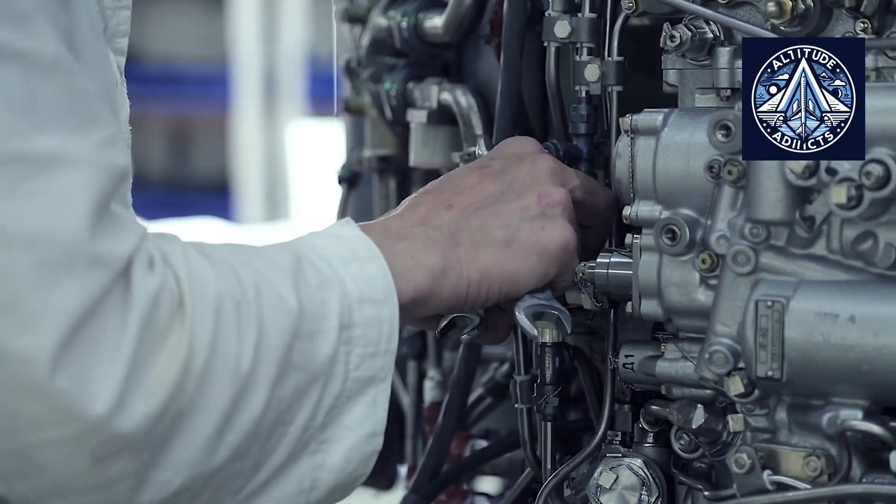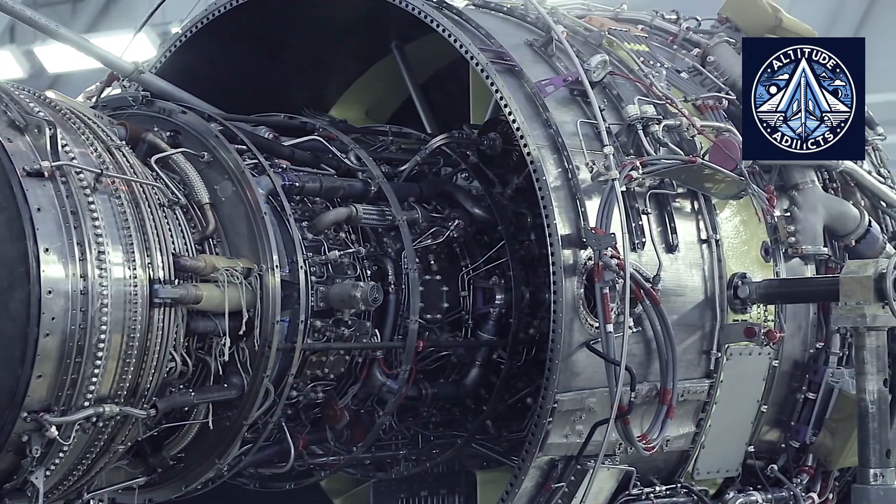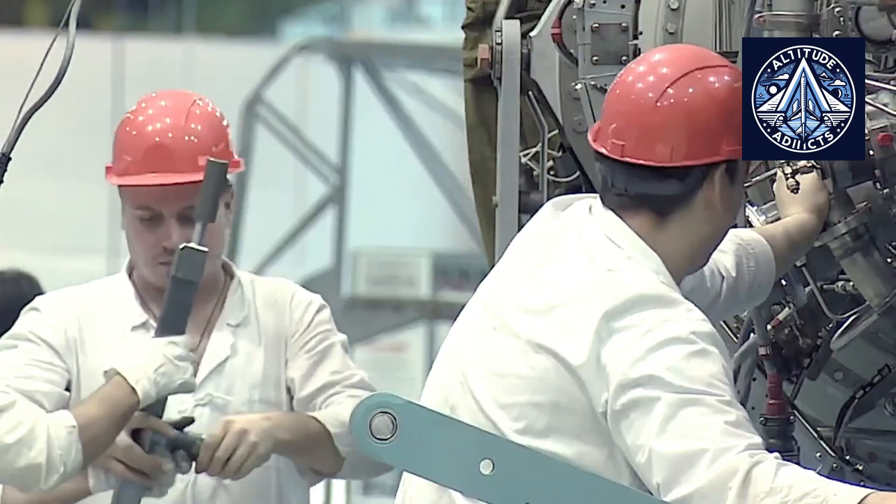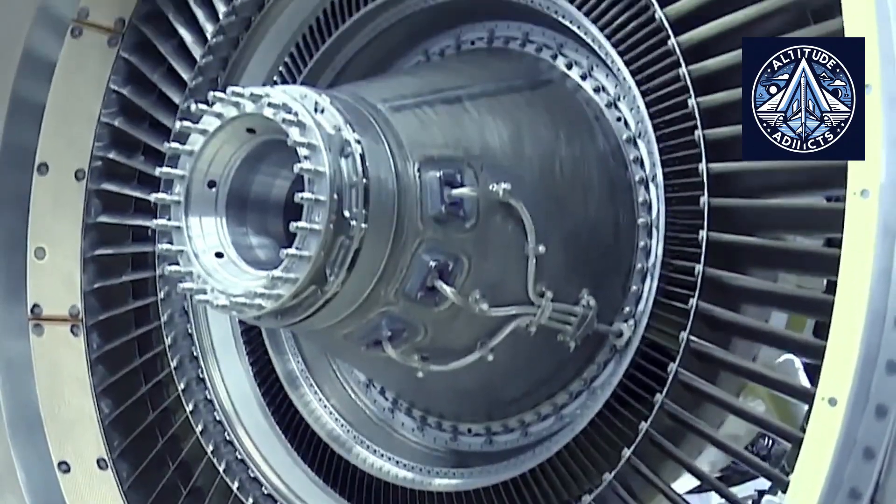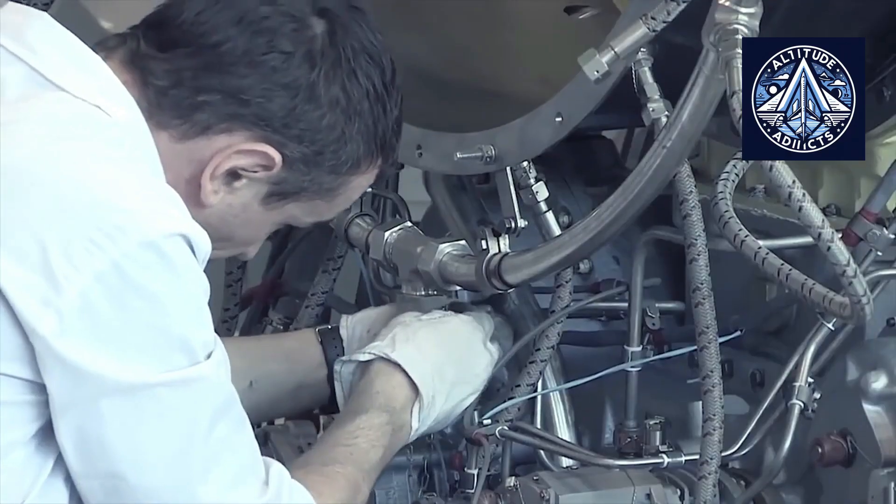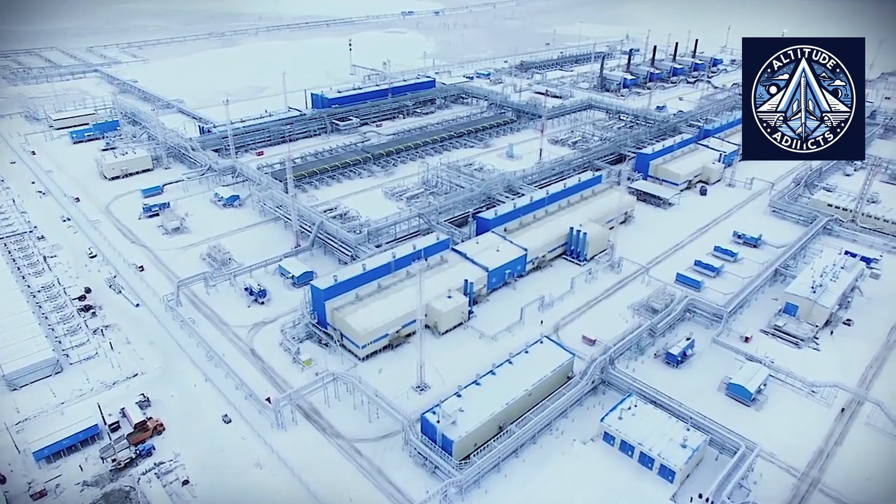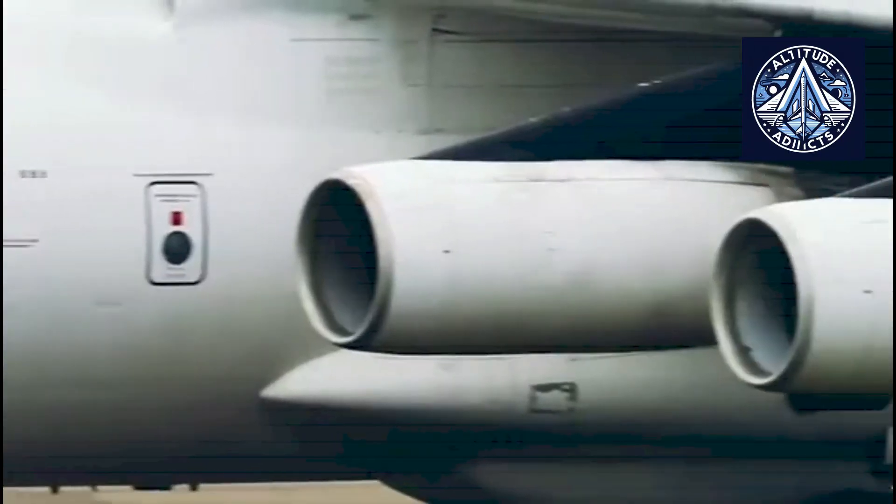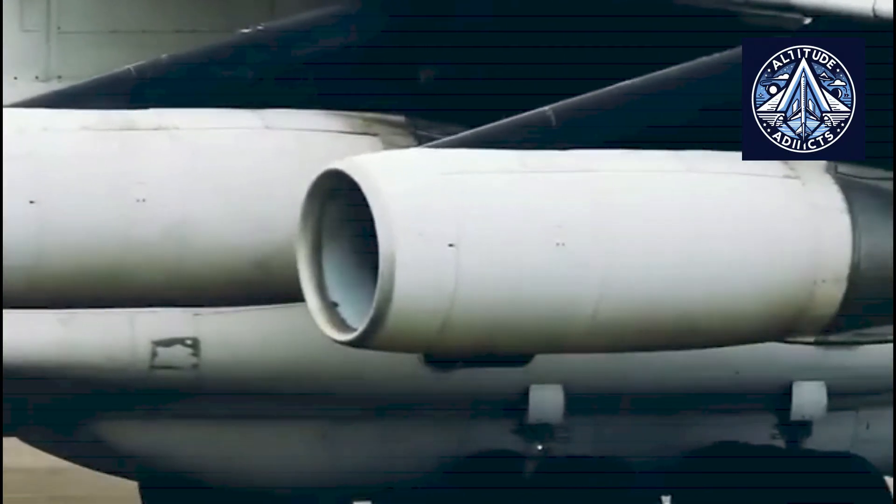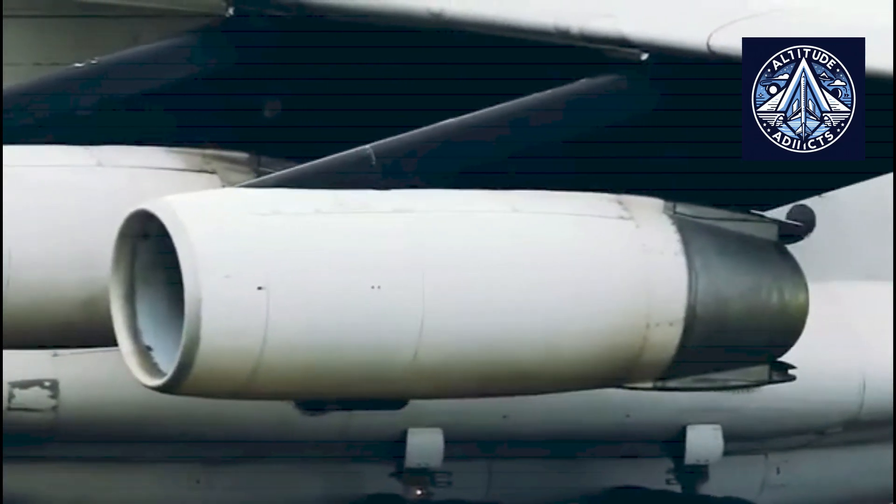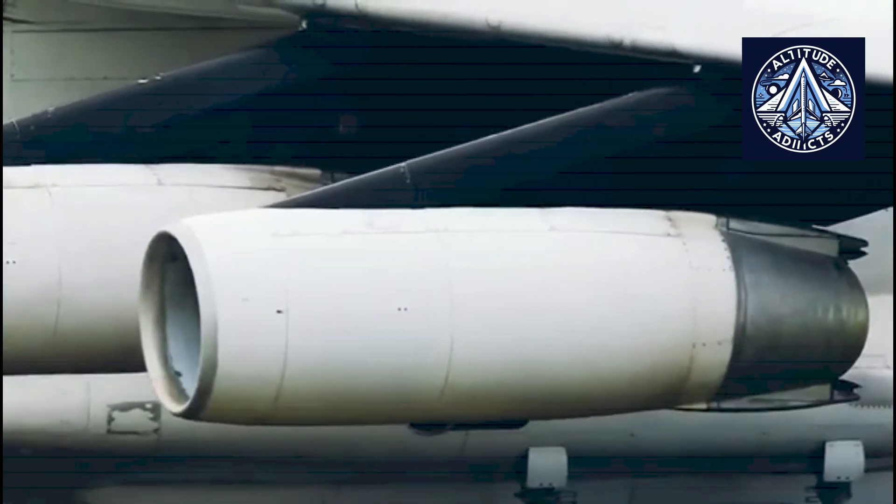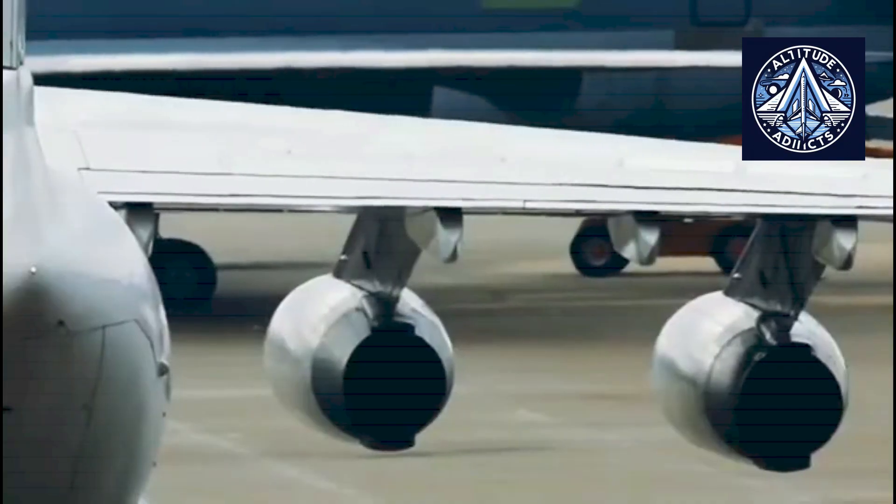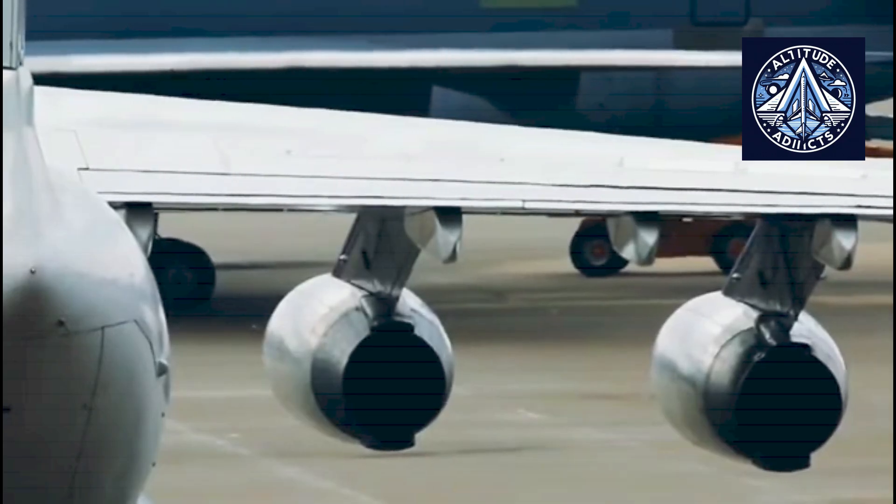The third generation, defined by the emergence of turbofan technology, developed during the 1960s and 1970s. For the first time, Soviet engineers introduced the two-spool turbofan layout with separate bypass and core airflow. This design greatly improved efficiency and reduced fuel consumption. Compressor pressure ratios now ranged between 15 and 20, while turbine inlet temperatures rose to between 1,300 and 1,450 Kelvin.